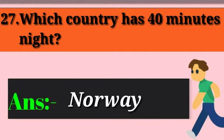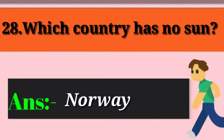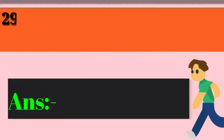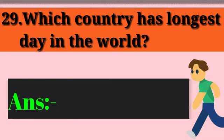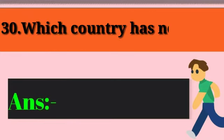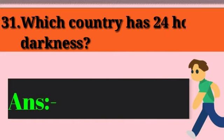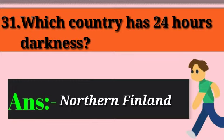Question 28: Which country has no sun? Answer: Norway. Question 29: Which country has the longest day in the world? Answer: Iceland. Question 30: Which country has no night? Answer: Qatar. Question 31: Which country has 24 hours of darkness? Answer: Northern Finland.